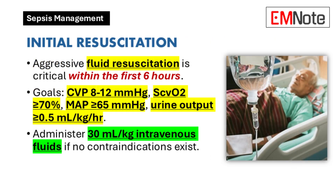Aggressive fluid resuscitation is a fundamental part of treatment within the first 6 hours. The goals are to increase central venous pressure to between 8 and 12 mmHg, central venous oxygen saturation to 70% or greater, mean arterial pressure to 65 mmHg or higher, and urine output to at least 0.5 mL per kg per hour. Current guidelines recommend administering intravenous fluids at 30 mL per kg for patients without contraindications.